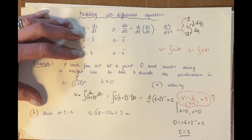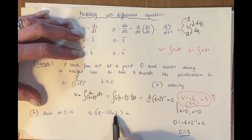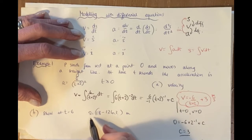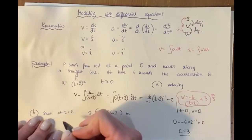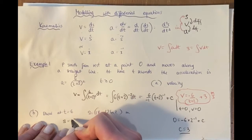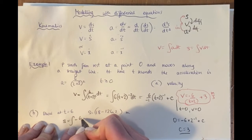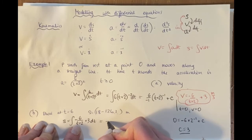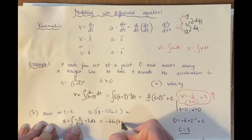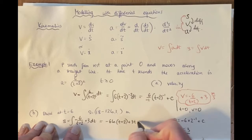Next we have to show that at time t = 6, the displacement is 18 − 12 ln 2 metres. To find displacement from velocity, we integrate velocity. So displacement = ∫(−6/(t+2) + 3) dt, which gives −6 ln(t+2) + 3t + c.